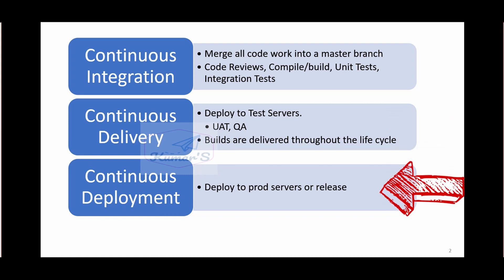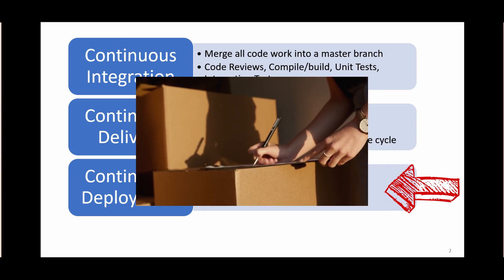Continuous Deployment takes the process one step ahead of Continuous Delivery. In Continuous Deployment, the actual deployment happens to the production environment in an automated way. In most cases, after delivery there is a final manual approval step before production goes live. Once deployed and tested successfully in the QA environment, a manual approval is required from stakeholders or customers before deploying to staging or production environments, where automated tests are run before a final push to production.